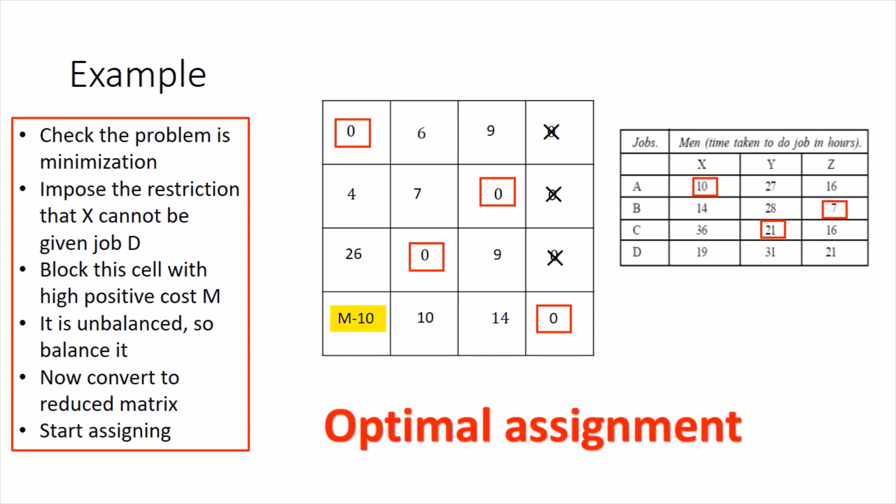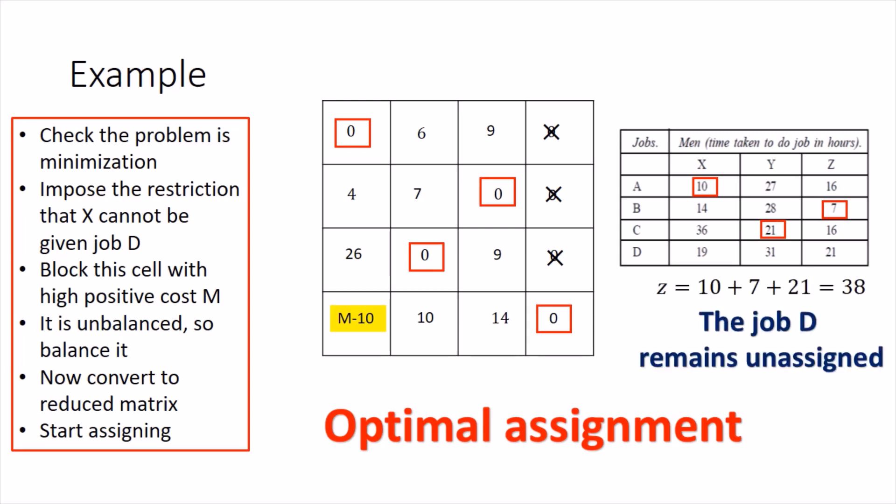Interpreting back into the original problem: X has been assigned job A, Y is assigned job C, Z is assigned job B. Job D remains unassigned because it goes to the fourth column, which is the dummy employee — that employee doesn't exist. Since the number of jobs exceeded the number of workers, one job was always going to remain unassigned, and that is job D. The total cost Z is computed by adding the relevant values, giving 38.